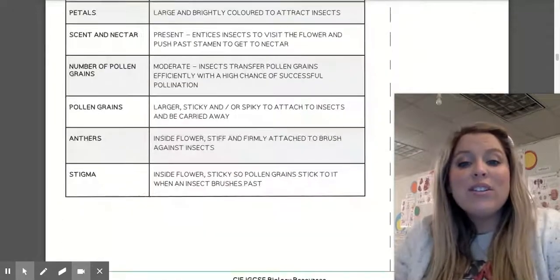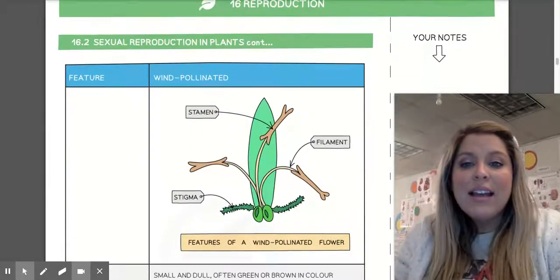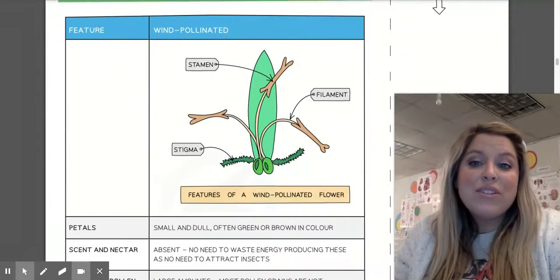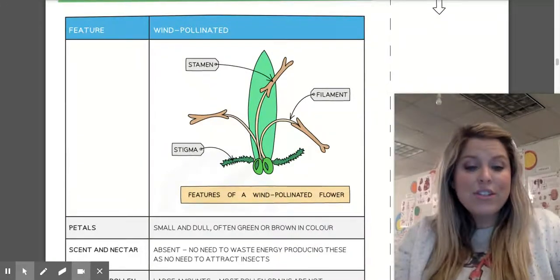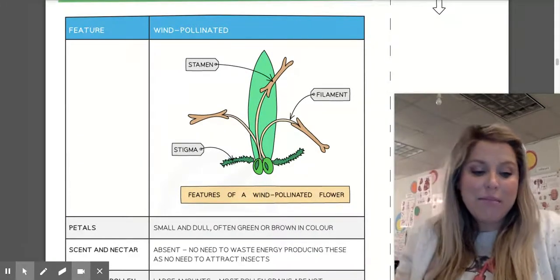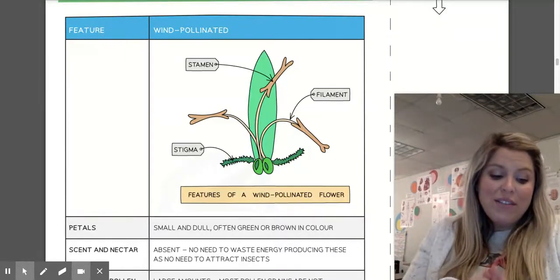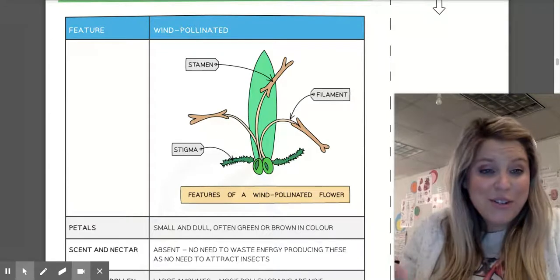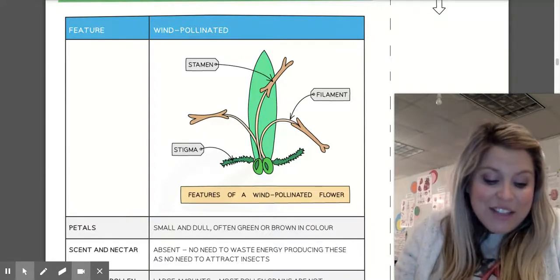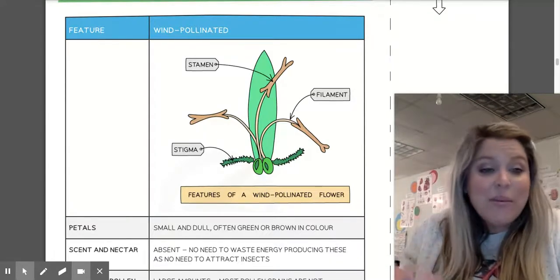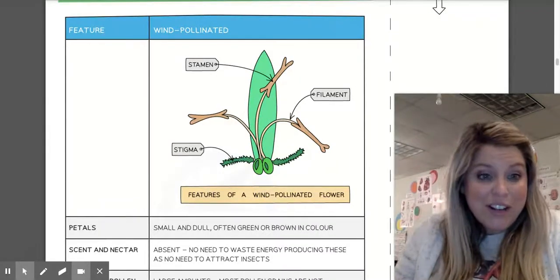Okay, now we can also look at the adaptations for wind pollinated plants. So if it's a plant that is typically wind pollinated, those petals are actually going to be smaller and dull and often green or brown in color because they're not needing to attract those insects. For their scent and nectar, it's absent. They don't need it. They don't need to waste their energy to produce it because they're not attracting insects.